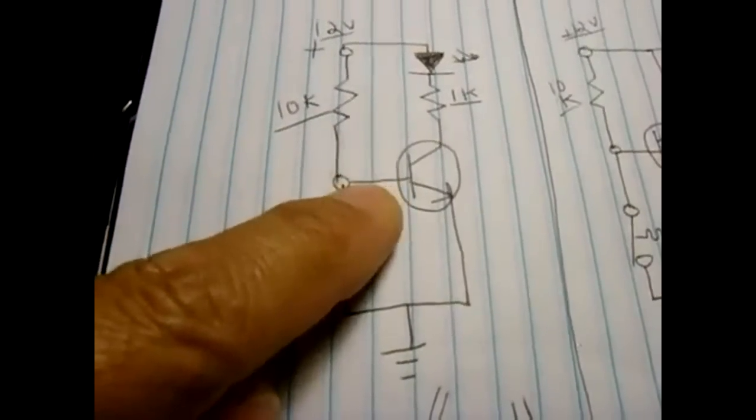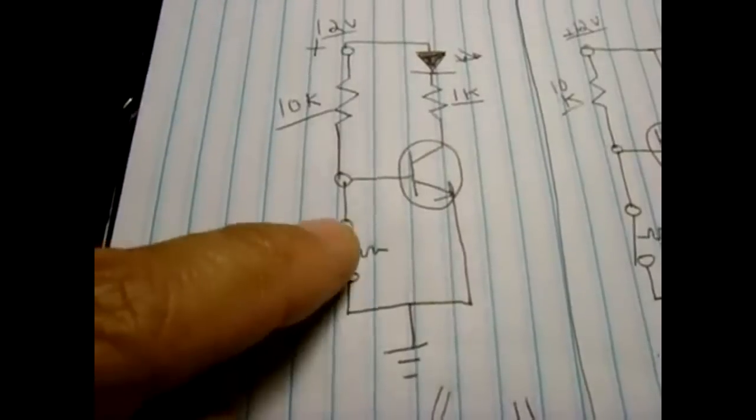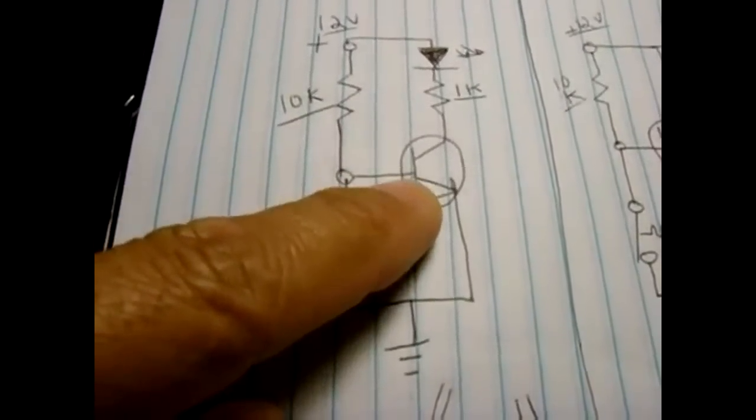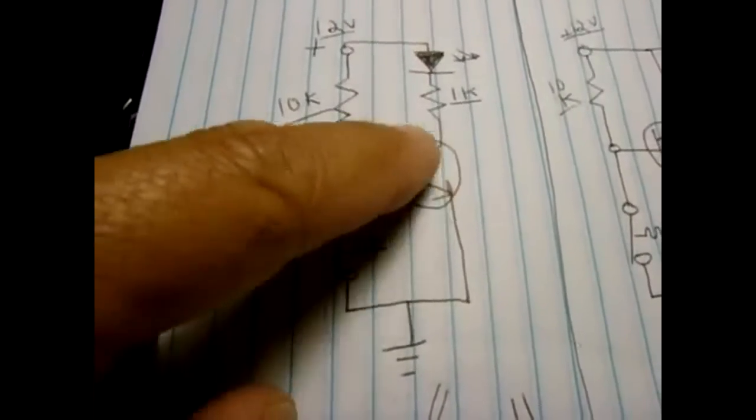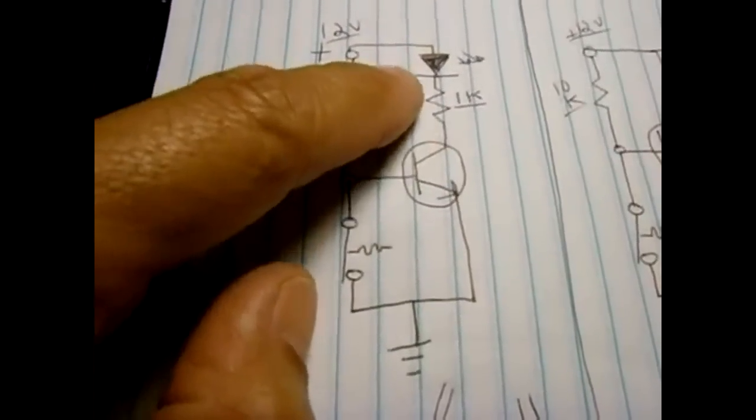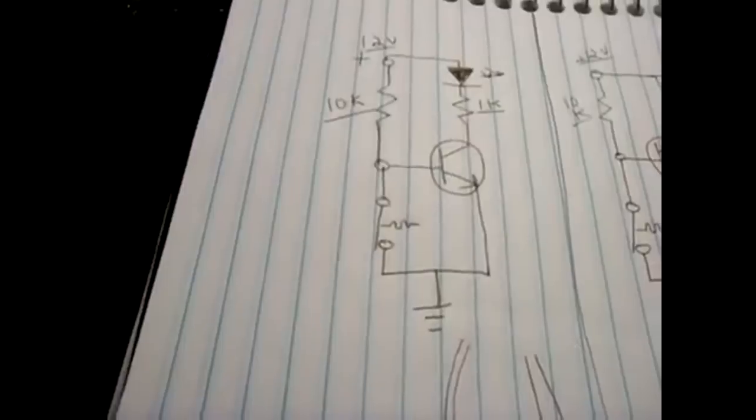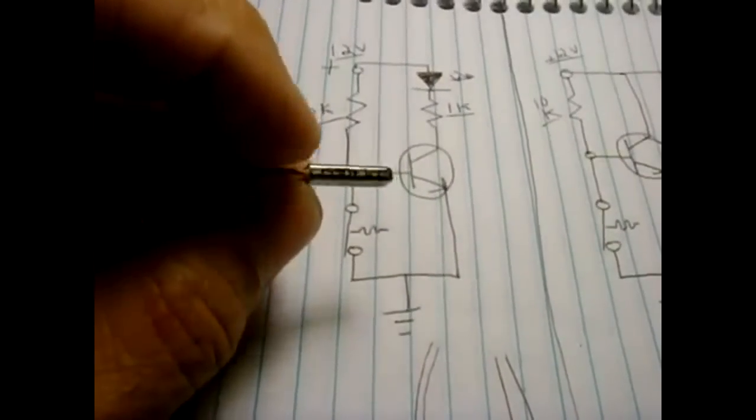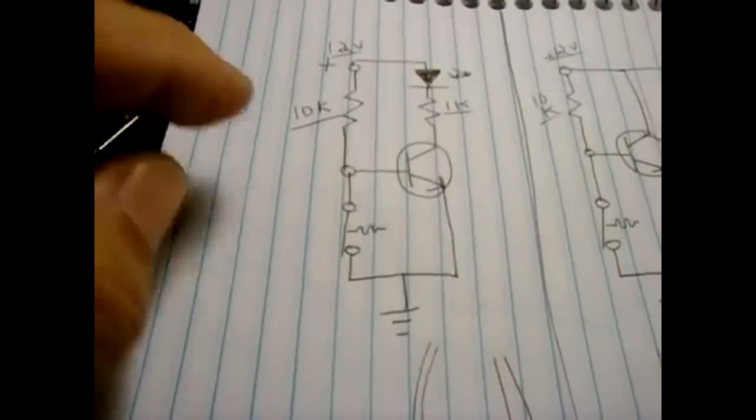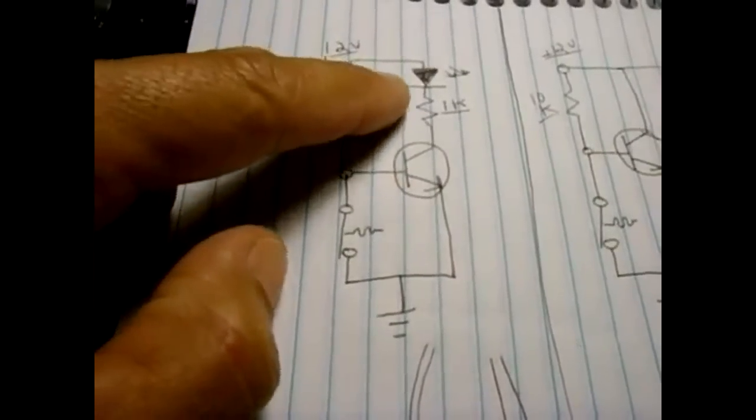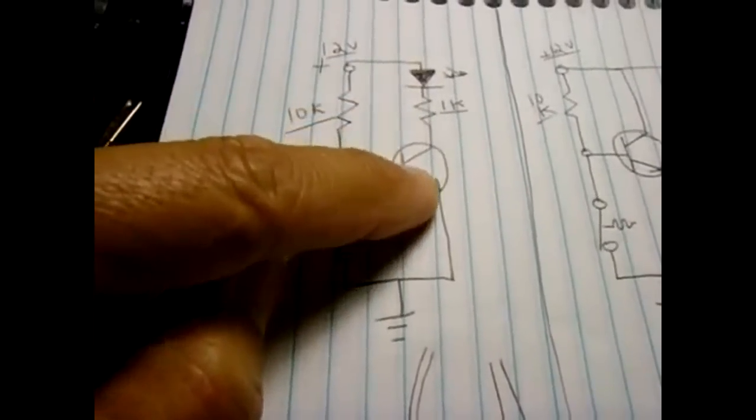Once this reaches a certain temperature where it opens, now you're going to have 12 volts and the voltage is going to increase. It won't be robbed anymore by this shunting to ground. You're going to have that voltage allowing the transistor to turn on, letting the current flow through which is going to light up that LED.